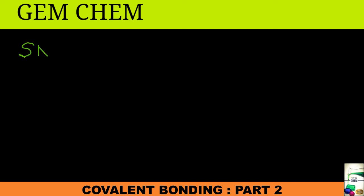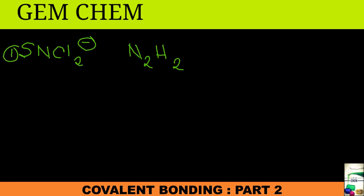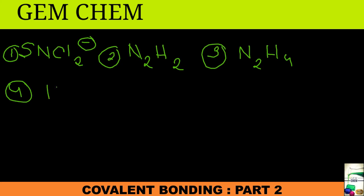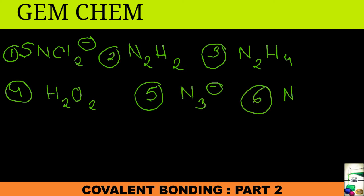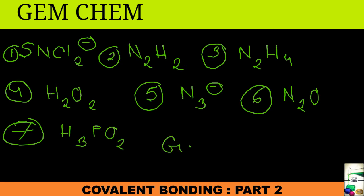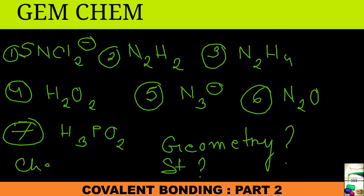The next few molecules are homework checkpoints: (1) SnCl₂⁻, (2) N₂H₂ (diamine), (3) N₂H₄, (4) H₂O₂, (5) N₃⁻ (azide ion), (6) N₂O, and also H₃PO₂ from earlier. Find the geometry and draw the structure for each. If you can't solve them, let me know in the comments and I'll solve them in the next video.